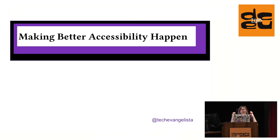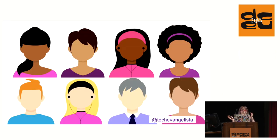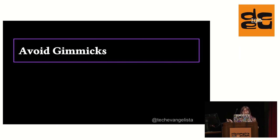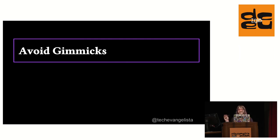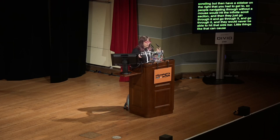When thinking about how to move past that and make better accessibility happen beyond just the basic steps: you can avoid gimmicks. Normally what's really popular on a website isn't necessarily good for accessibility. Infinite scrolling was really popular for a while, but people would do infinite scrolling and have a sidebar on the right you had to get to. People navigating without a mouse would hit the infinite scroll section and just go through it endlessly, never able to reach that sidebar.